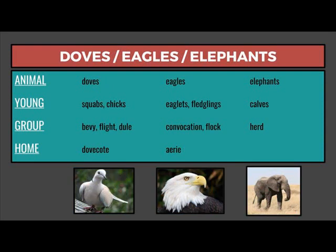The young of doves are squabs or chicks. A group of doves would be a bevy, a flight, or a dule — d-u-l-e — and their home would be a dovecote. The young of eagles are eaglets or fledglings. A group would be a convocation or flock, and the home of an eagle is an aerie — a-e-r-i-e.